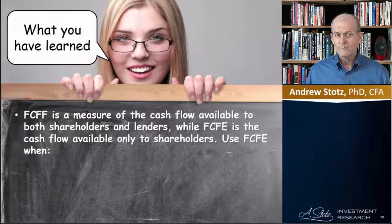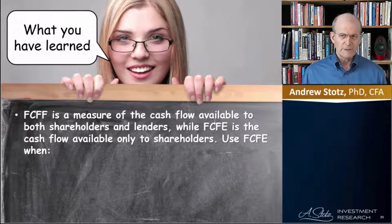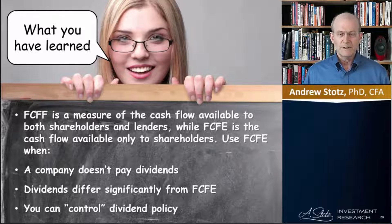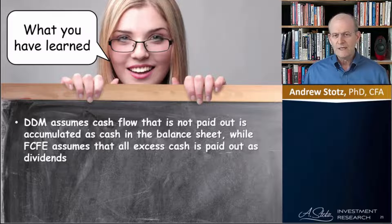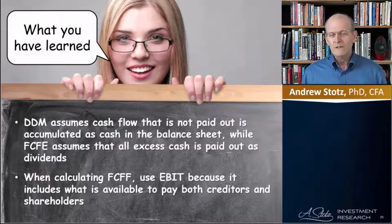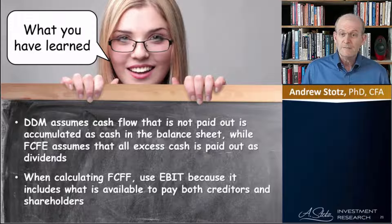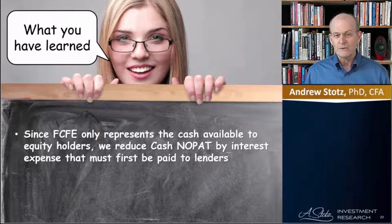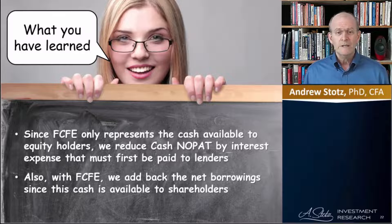Free cash flow to the firm is a measure of cash flow available to both shareholders and lenders, while free cash flow to equity is the cash flow available only to shareholders. Use free cash flow to equity when a company doesn't pay dividends or when dividends differ significantly from free cash flow to equity. The dividend discount model assumes cash flow not paid out is accumulated as cash on the balance sheet, while free cash flow to equity assumes all excess cash is paid out as dividend. When calculating free cash flow to the firm, use EBIT because it includes what is available to pay both creditors and shareholders. Since free cash flow to equity only represents cash available to equity holders, we reduce cash NOPAT by interest expense that must first be paid to lenders, and we add back the net borrowings since that cash is available to shareholders.